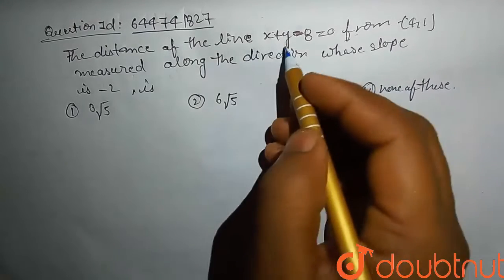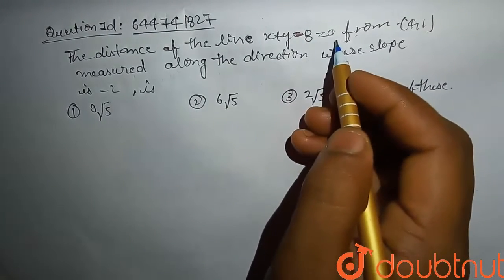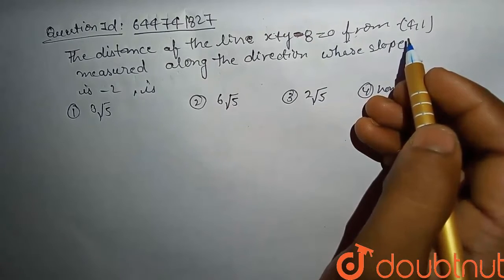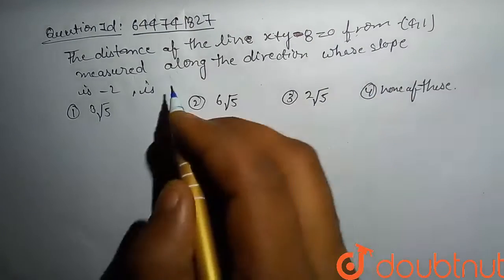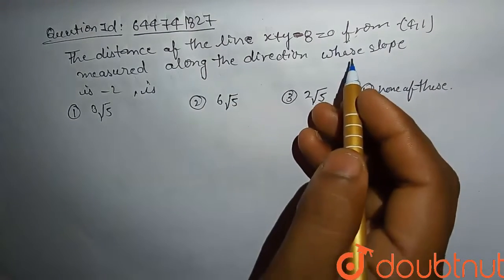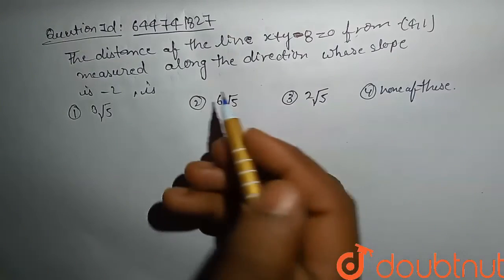The distance of line x plus y minus 8 equals 0 from (4,1) measured along the direction where slope is minus 2. We need to find that distance.